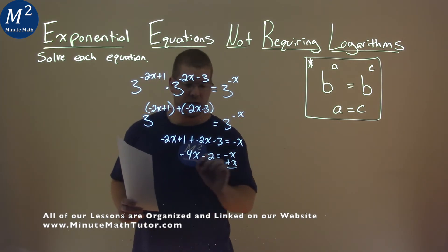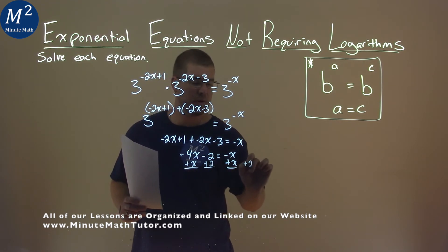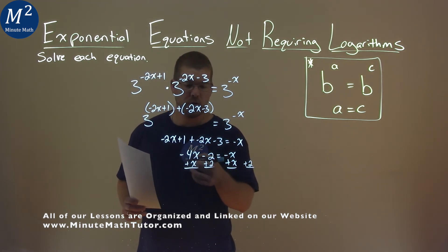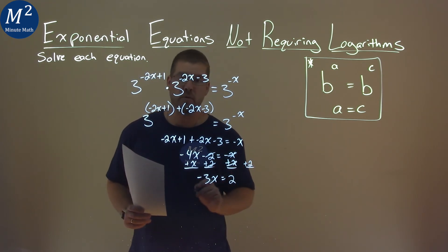I'm going to add a 1x to both sides, and I'm going to add a 2 to both sides. Let's bring our numbers to the right and our variables to the left. Negative 4x plus 1x is a negative 3x, and these 2's cancel. These x's cancel, and we just have a positive 2 on the right.